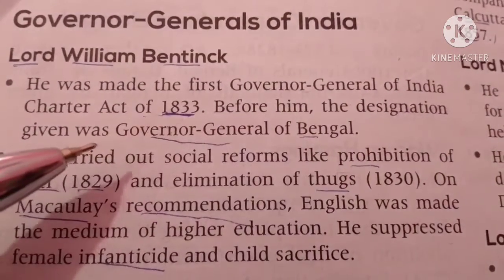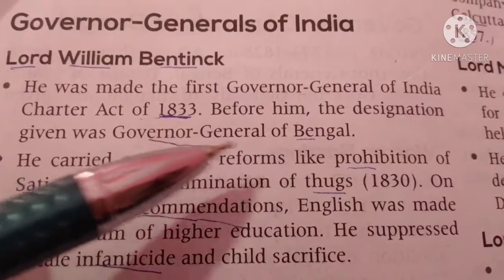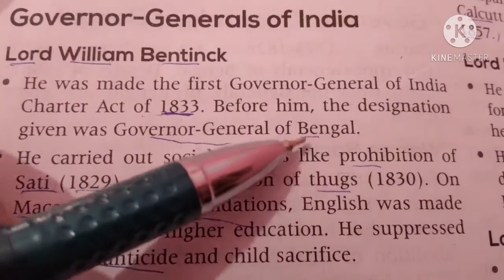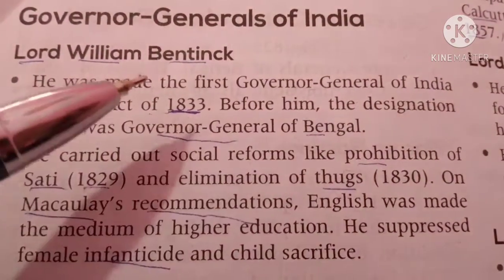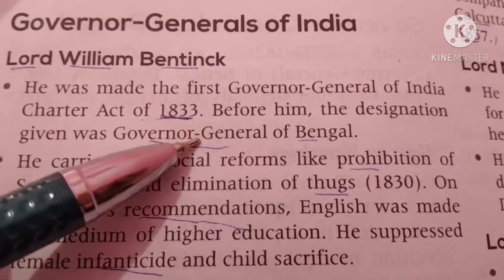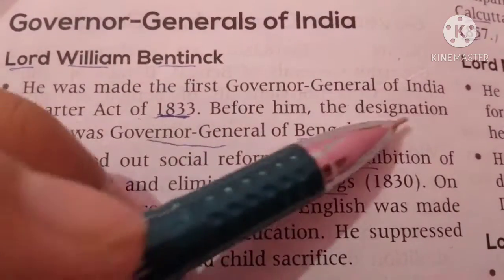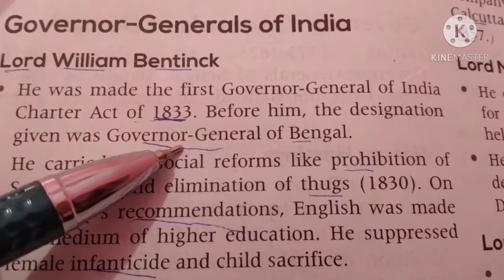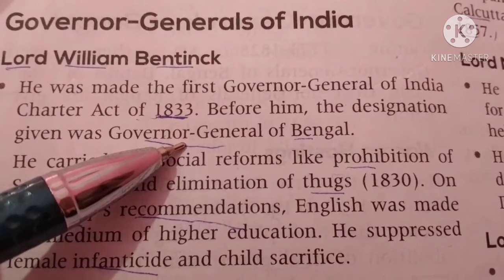Before him, the designation given was Governor General of Bengal. The Governor General of Bengal was a very different title. In 1833, the title changed to Governor General of India. So the first Governor General of Bengal was Warren Hastings.